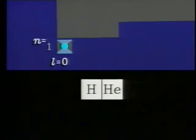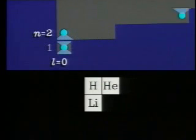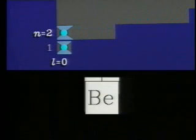The n equals 2 shell of orbitals has room for eight electrons. The first with l equals 0 makes a lithium atom. The next with opposite spin makes beryllium.